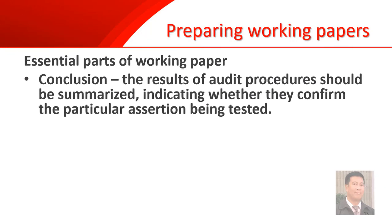One of the essential parts of the working paper is the conclusion. You have to provide the result of your procedures and indicate whether they confirm a particular assertion being tested. For example, if your audit purpose is to inspect particular equipment, the assertion being tested would be existence. In your conclusion, you have to mention what audit procedure was performed — perhaps you went to the site and physically inspected the equipment — and then confirm whether you tested that assertion, in this case, existence.